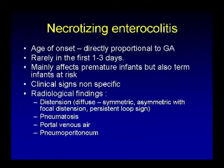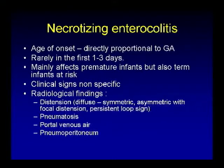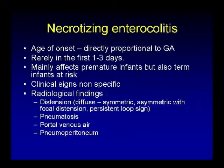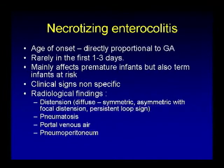Clinical signs are nonspecific, and so are radiological signs, especially in the early phase. The only finding may be diffuse symmetric or asymmetric focal distension of bowel segments. Persistent loop sign is a helpful early sign, indicating lack of peristalsis in dead bowel and persistence of an air-filled segment on subsequent follow-up radiographs. Pneumatosis, portal venous air, and pneumoperitoneum are more definitive for diagnosis, but present only in advanced cases.